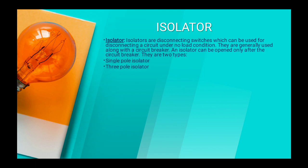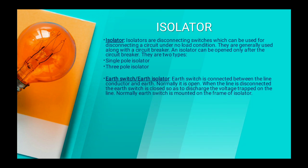There are mainly two types. First, the single pole isolator used in single phase systems; second, the three pole isolator with three contacts used in three phase three wire lines; and third, the R switch or R isolator. The R switch is connected between the line conductor and the earth. Normally it is open. When the line is disconnected, the R switch is closed to discharge the voltage trapped on the line. Normally the R switch is mounted on the frame of the isolator, and when the main isolator is disconnected from the line, the R isolator is closed to discharge the fault current or the trapped voltage on the line.